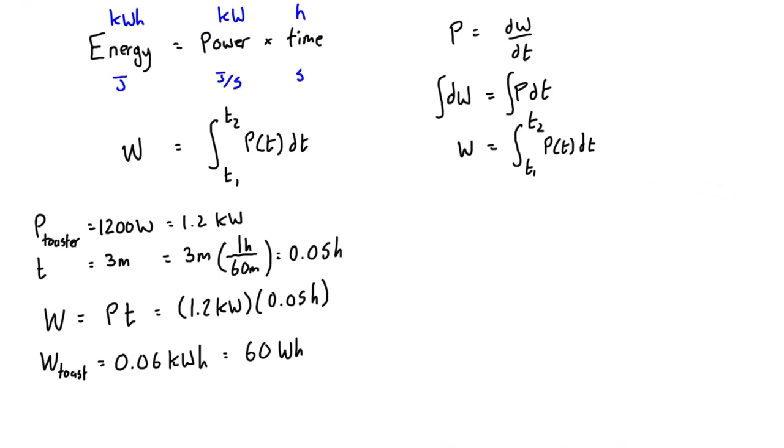Now we could compare that to something else. Let's imagine we had an LED light bulb that had a power consumption of six watts. So we have P bulb is equal to six watts. So then if our energy is equal to power times time, then we can reorganize this to have time is equal to energy over power, which is 60 watt hours over six watts.